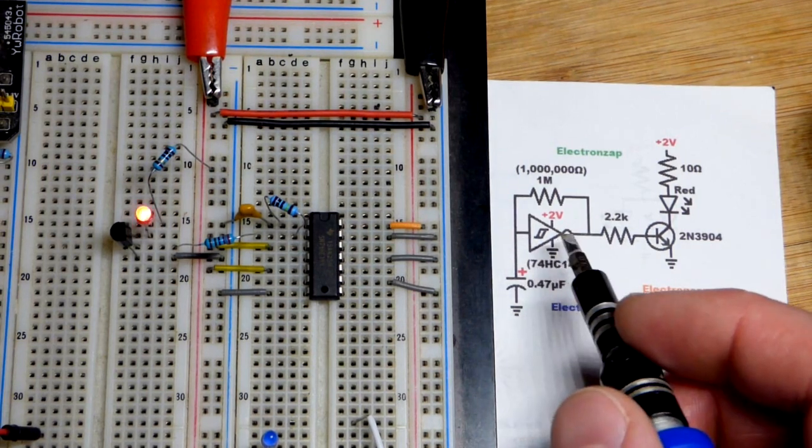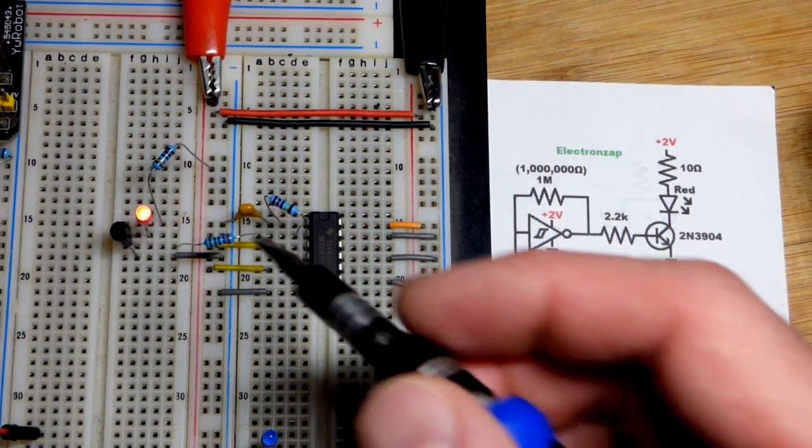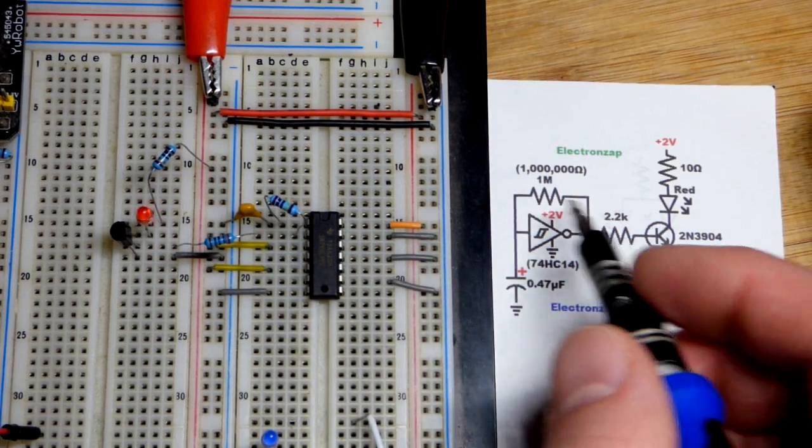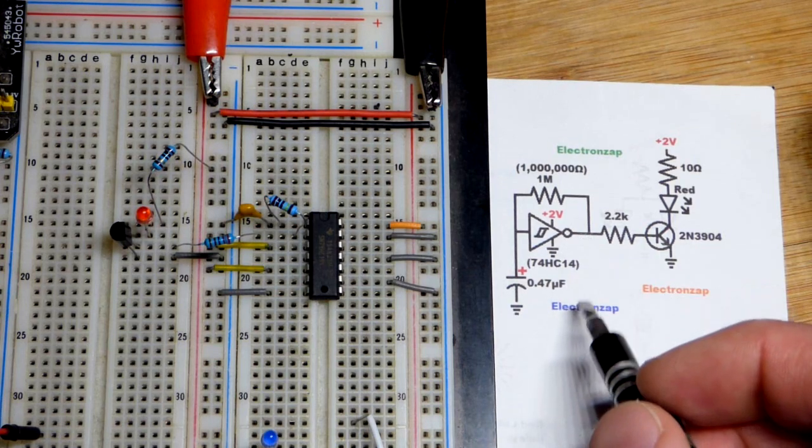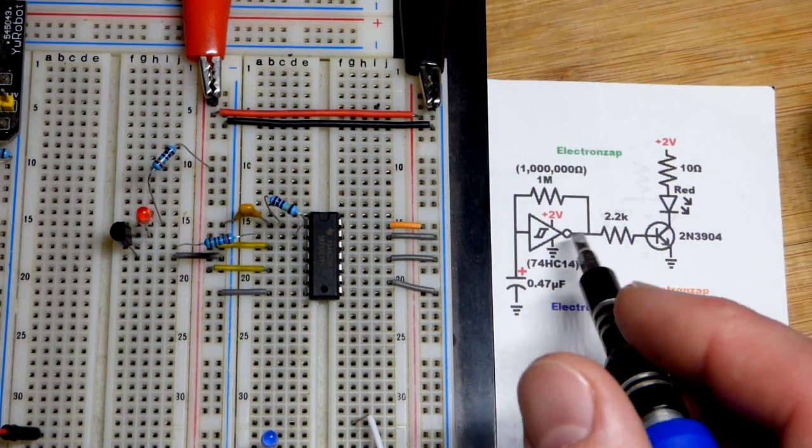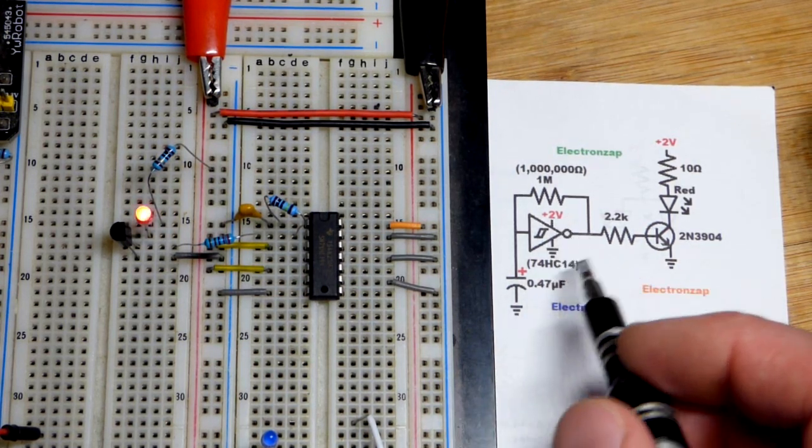We have a NOT gate here, Schmidt trigger NOT gate I should say, that is wired up to oscillate just by itself with the timing resistor and capacitor. Last video we were powering an LED directly with it and the LED lit up when the output went high.